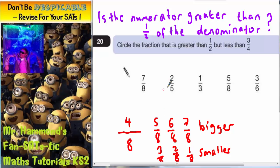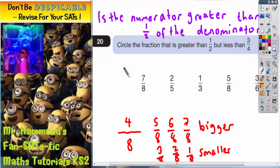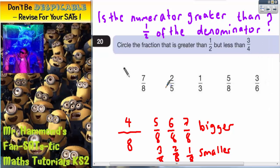So that's what we're looking for. So can we eliminate any straight away? Well, seven is obviously bigger than half of eight. So that one's got to stay.